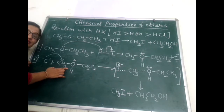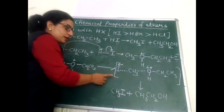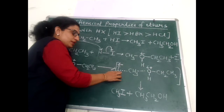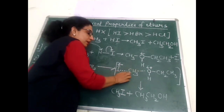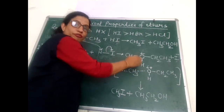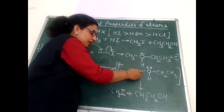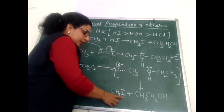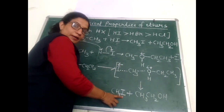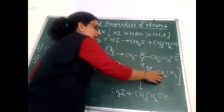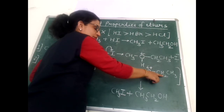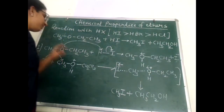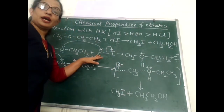Since bond formation and bond breaking occur simultaneously, a transition state is reached. The transition state shows the carbon-iodide bond in the process of forming while the carbon-oxygen bond is breaking. When the final state is reached, this bond is completely formed and methyl iodide is produced, while the carbon-oxygen bond is completely broken and ethyl alcohol is formed. This is how the reaction takes place between unsymmetrical ethers and hydrogen halides.